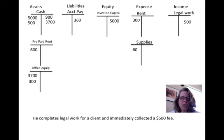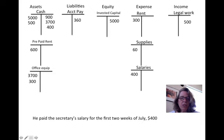The next transaction: he completes legal work for a client and immediately collects a $500 fee. This is income of $500 and he received $500 cash. The next one: he paid a secretary salary for the first two weeks of July of $400. An increased expense is a debit entry, and a decrease in cash of $400 is a credit entry.